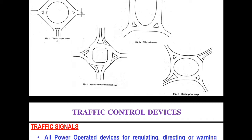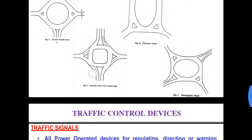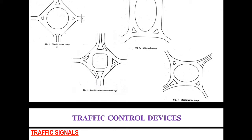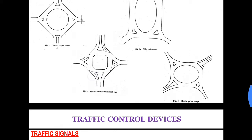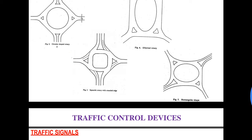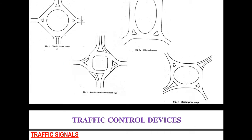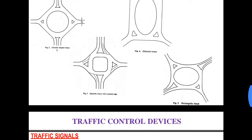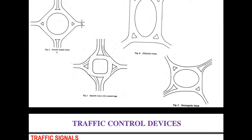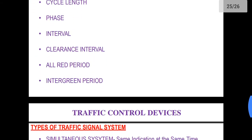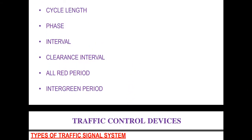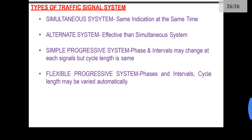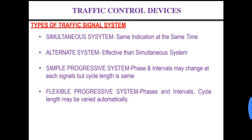For example, if the green signal for the road from the southern direction ends at 30 seconds and the green signal for the western road would start at 36 seconds, then the interval or the space between these two green times would be six seconds. That is nothing but the inter-green period.